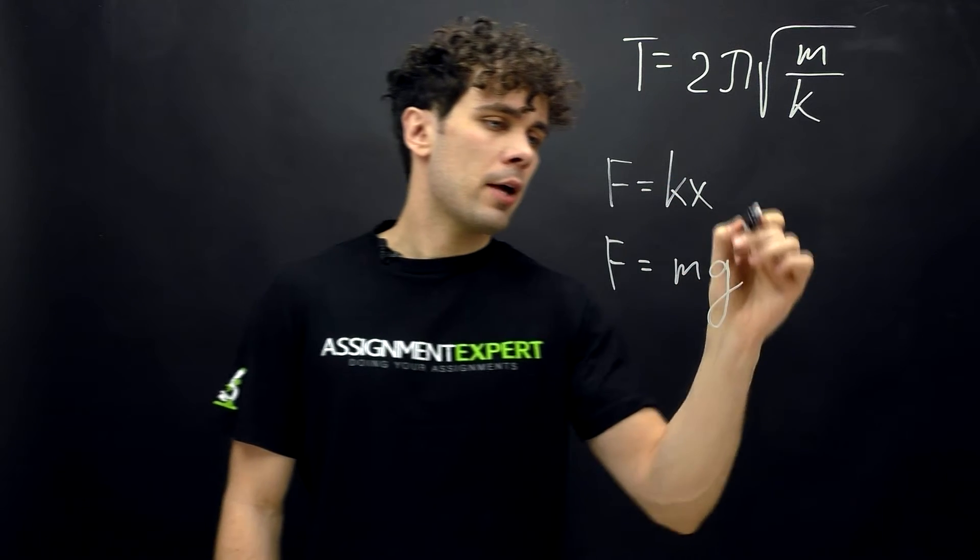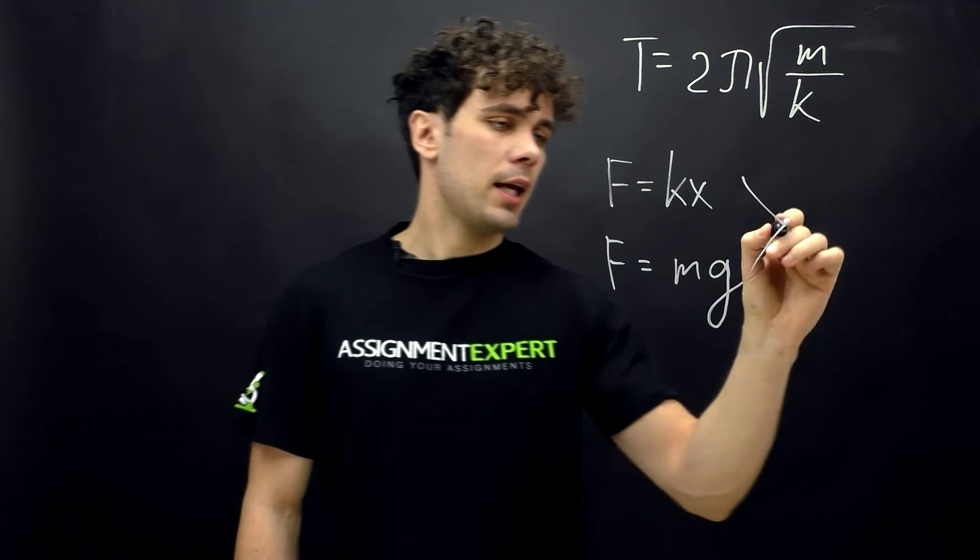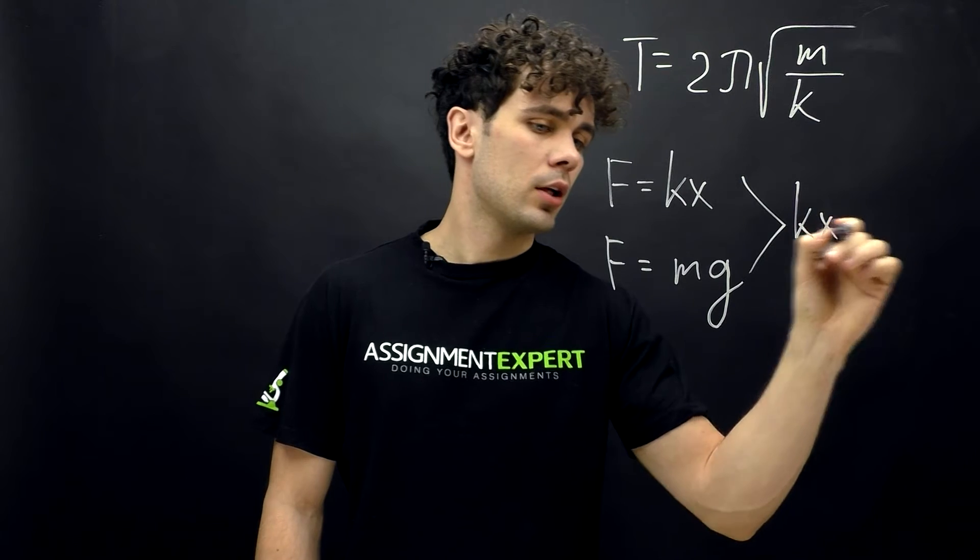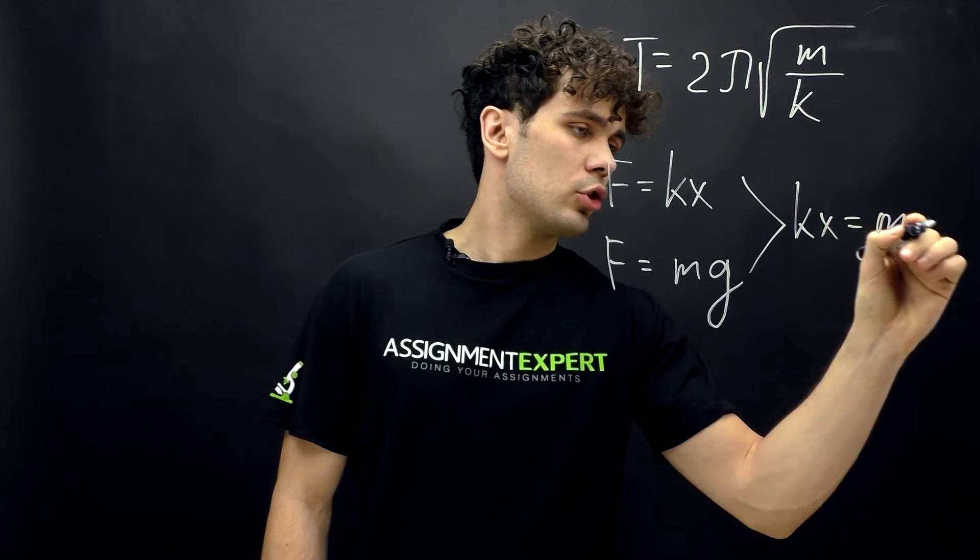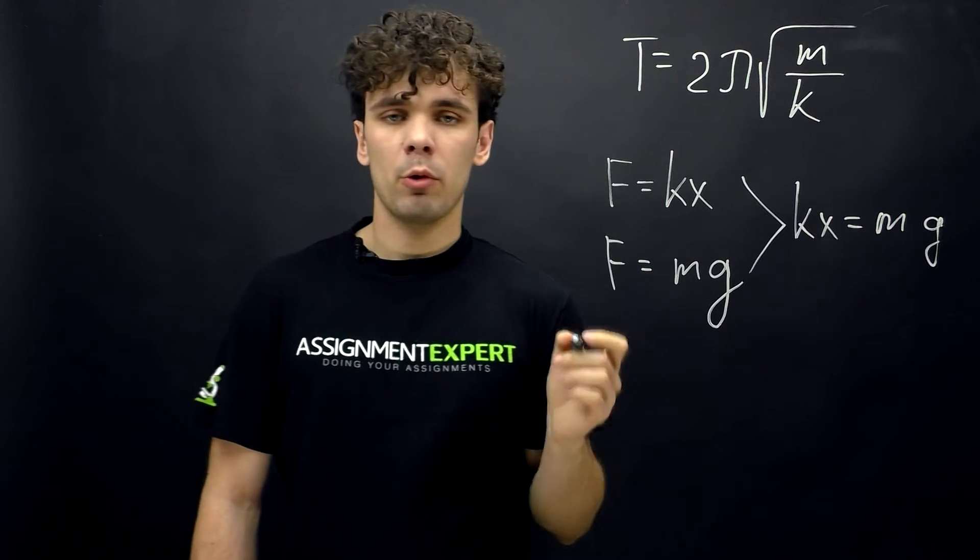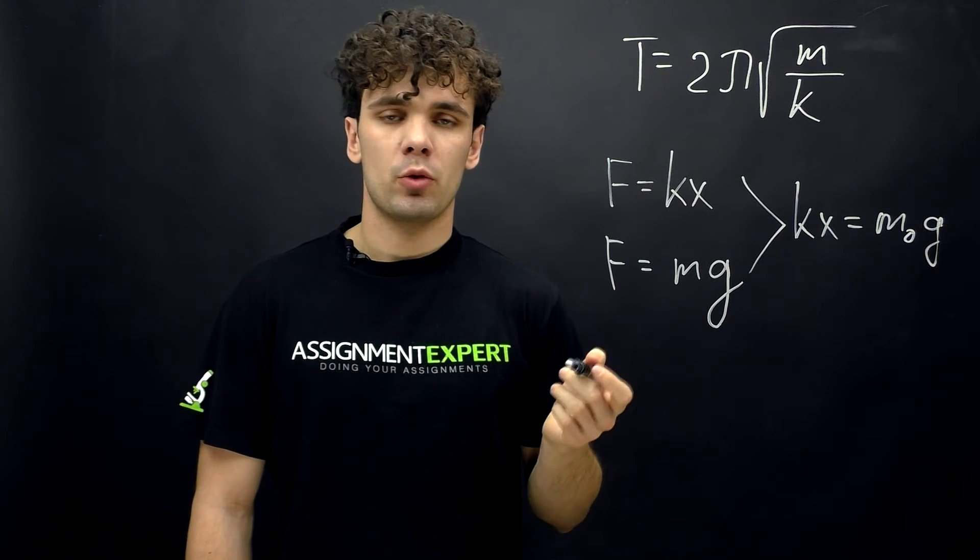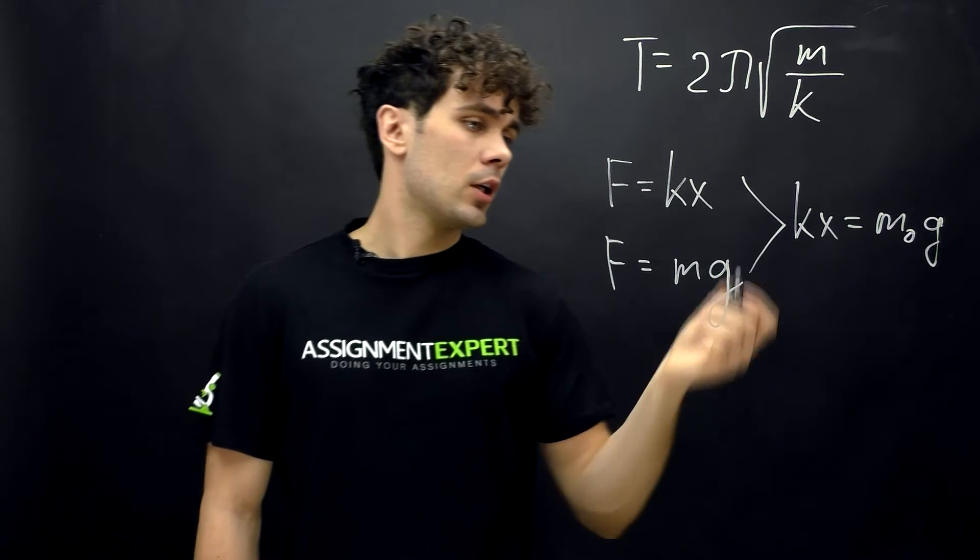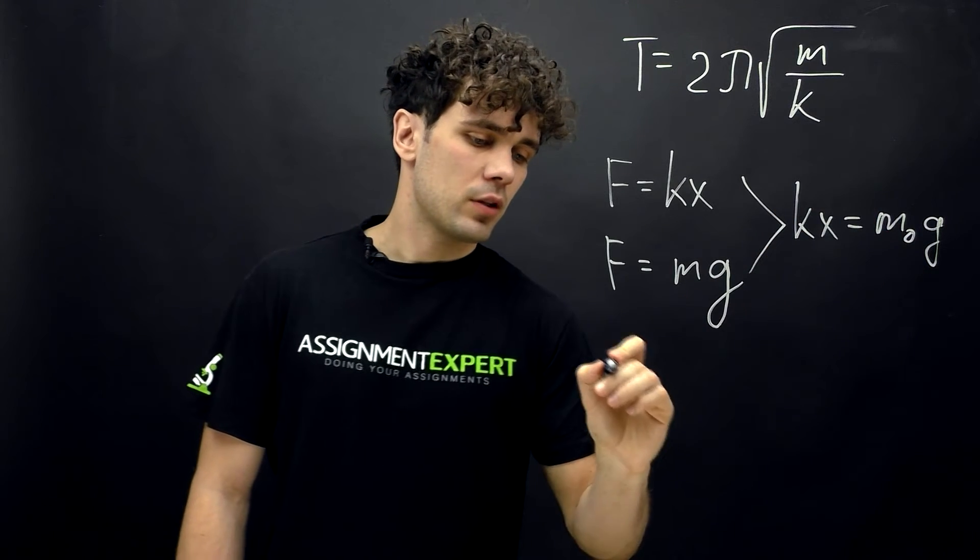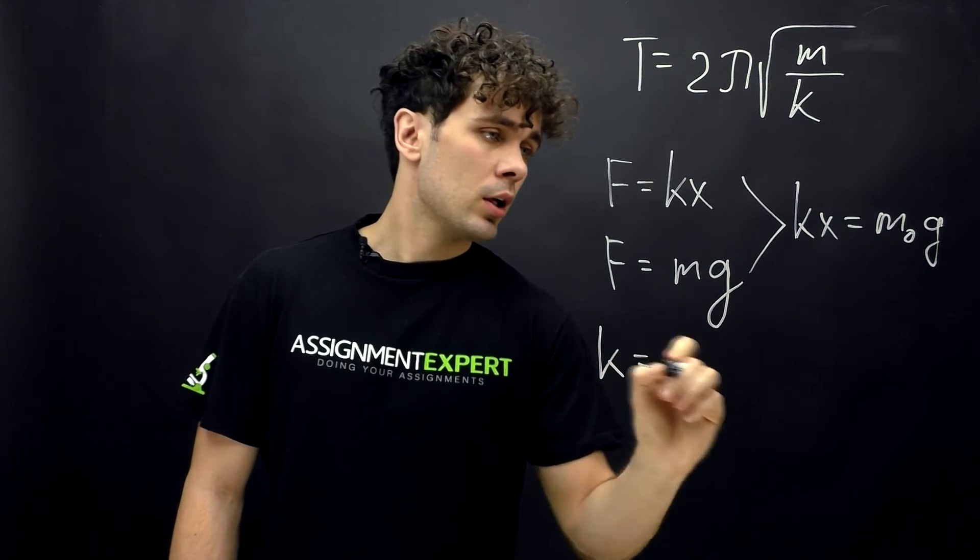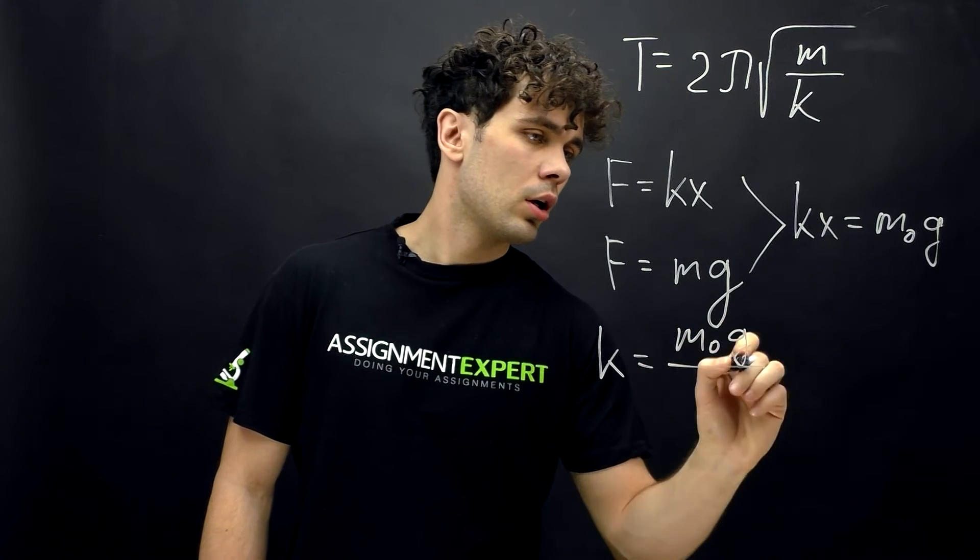Now we combine them and we get kx equals mg. And here we will add index 0, because we will use the first mass we're given, 4 kilos. And from here we can get the stiffness: k equals m0g over x.